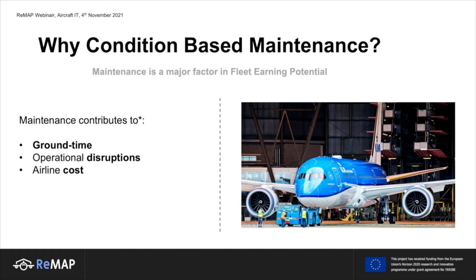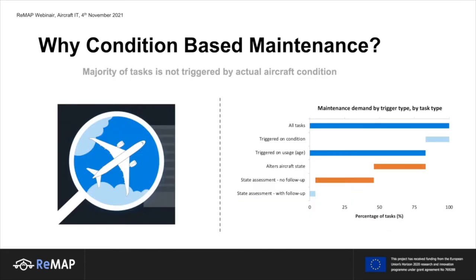Looking at the nature of tasks we perform today on our aircraft, we see that the majority — 80 percent — are not triggered on the condition of the aircraft but instead on the age of the aircraft, expressed in flight cycles or flight hours. From those tasks, about half is just an inspection that doesn't really lead to an alteration of the state of the aircraft. By knowing the condition of the aircraft and all its components up front, we could tailor our maintenance and only execute what is needed.